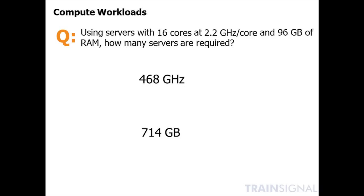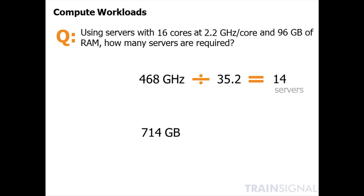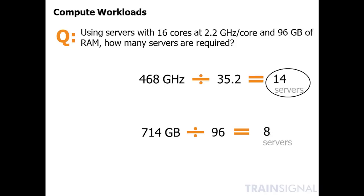At first glance, you might take 468 and divide it by 35.2 — that 35.2 being 16 cores times 2.2 gigahertz each. Walking through that calculation, you'd end up with 13.3 servers, which rounds up to 14 servers to meet the CPU requirements. Using that same process for RAM, 714 gigabytes divided by 96 gigabytes per server gives us approximately 7.4 servers, which rounds up to 8 servers.